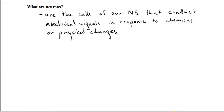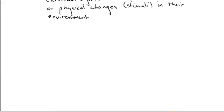Another word we use for chemical or physical changes is simply stimuli. And basically, if you have one cell, it equals a neuron.